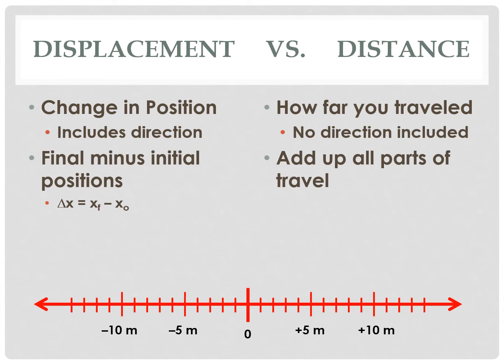To find displacement we take the final position and subtract the initial position. Here we see the delta symbol — this triangle is actually a Greek letter that means 'change in,' specifically final minus initial. The x here stands for position, so it's final minus initial position, which we see right here in this part of the equation: final position minus the initial position.